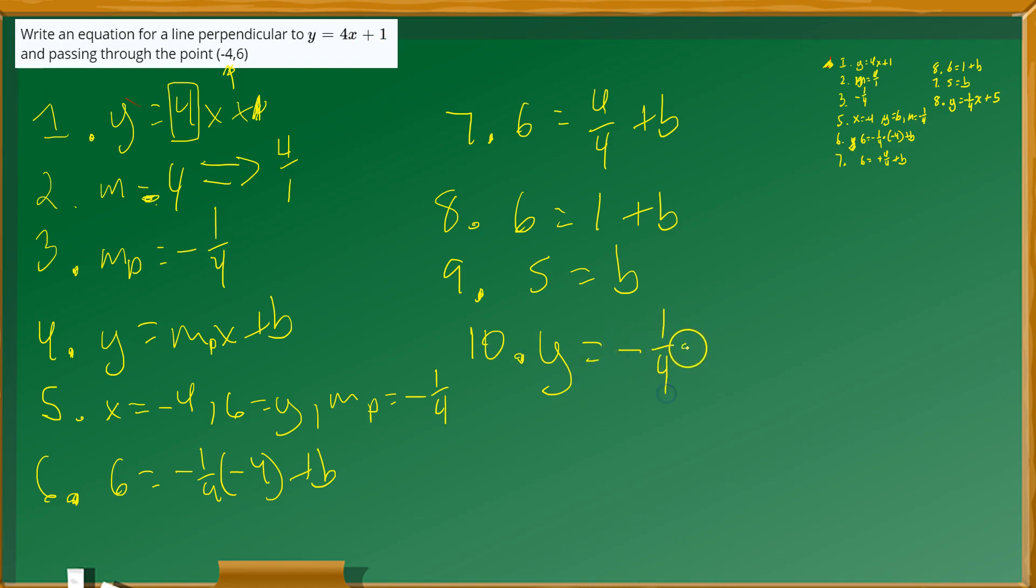We'll say y equals, you stick in that slope you found, negative 1 quarter, you multiply by x, and you add to that the value of b, which you have found, and that is 5. So this is essentially then the equation that we want to find. And that's it.